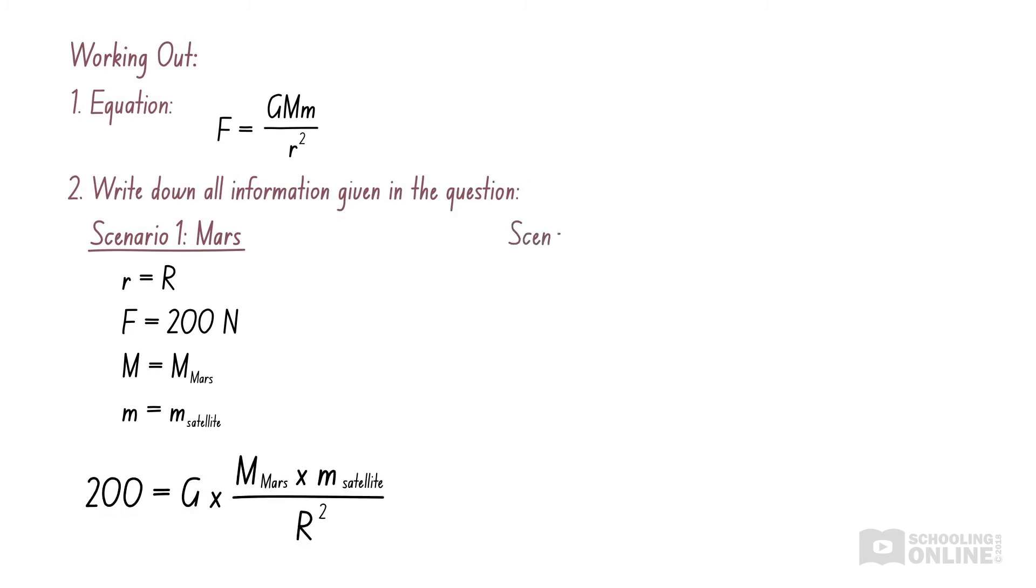In the second scenario, the distance has doubled, the force is unknown, the mass of planet X is half the mass of Mars, and the mass of the satellite remains constant. This gives us the following equation.